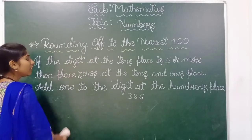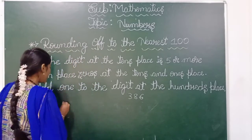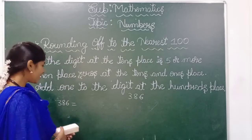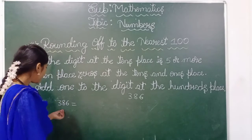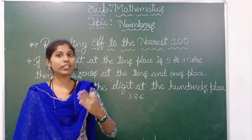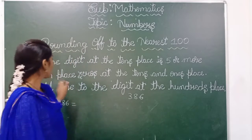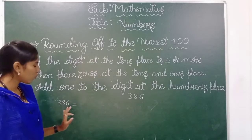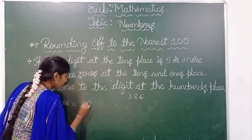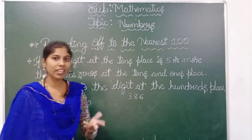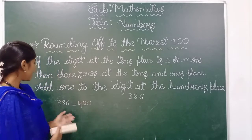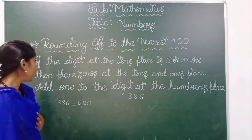Here is another example: 386. Rounding off 386 to the nearest hundred — what is the digit in the tens place? The digit in the tens place is 8, which is more than 5. So according to the condition, the ones and tens places become zero, and add one to the hundreds place. So 386 is rounding off to 400.